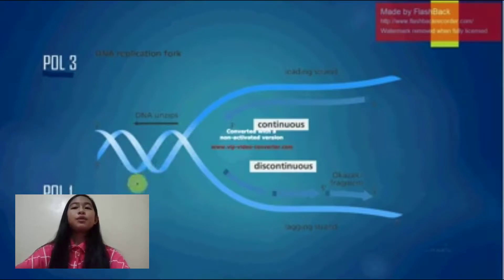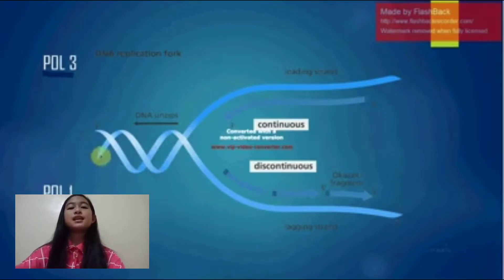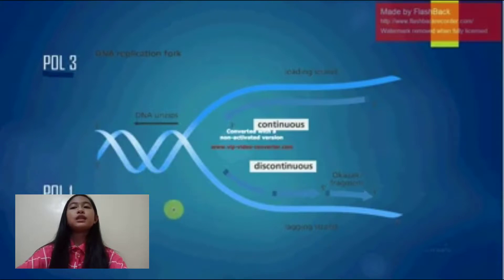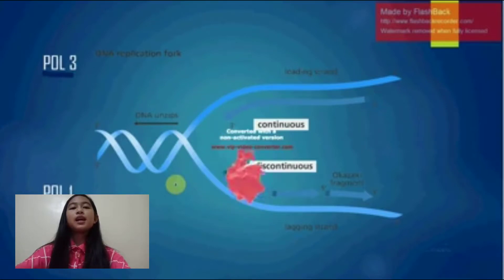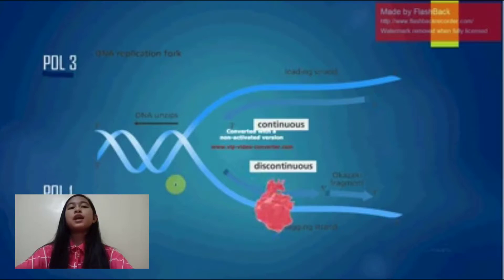This leaves a gap between the 3' end of the newly synthesized DNA and the 5' end of the DNA previously synthesized by pol 3. The gap is filled by DNA ligase, an enzyme that makes a covalent bond between a 5' phosphate and a 3' hydroxyl group.